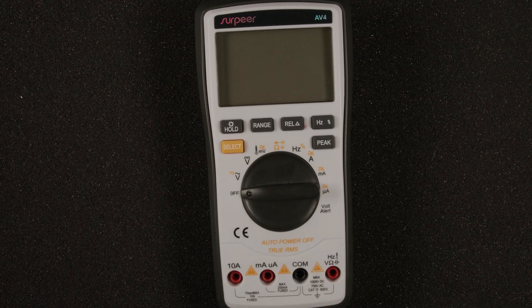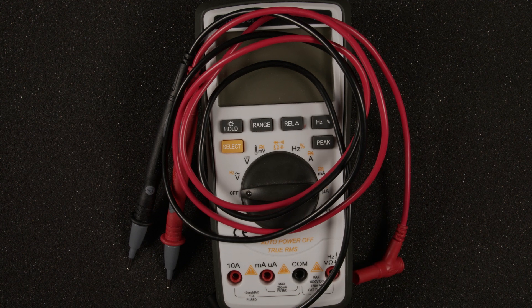To use a multimeter we're going to need two things, the multimeter itself, and some probes that we can probe our circuit with.